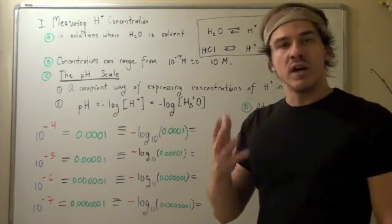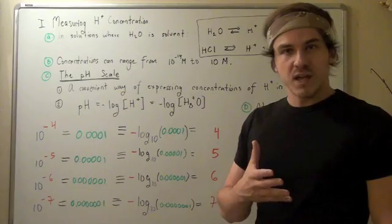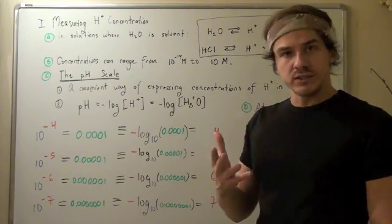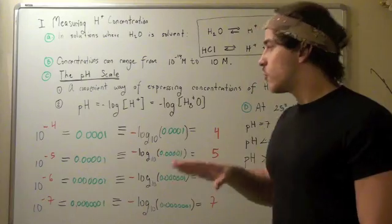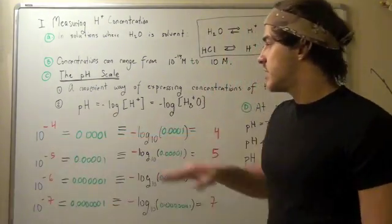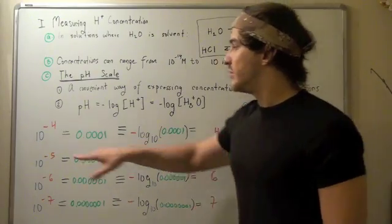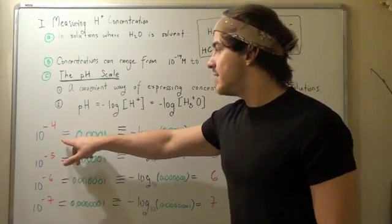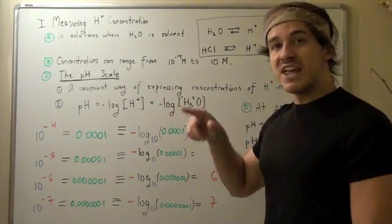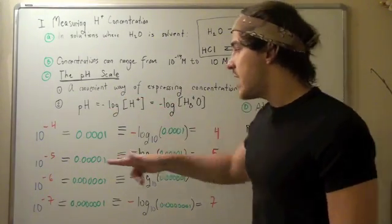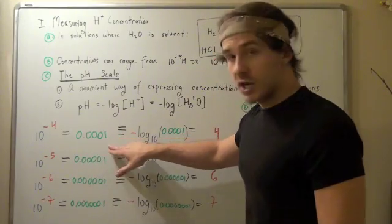Logs are simply another way of representing exponents. And if you want to find the exponent, you use logs. For example, suppose we're given this equation here. So, 10 to the negative 4 is equal to 1 over 10,000, which is another way of saying 0.0001.